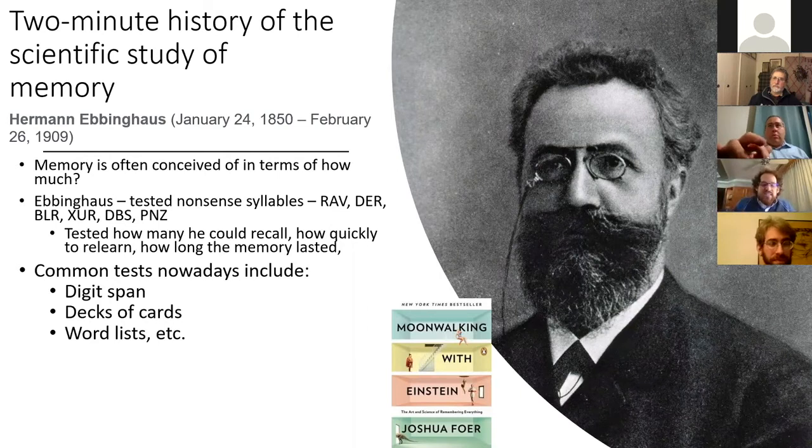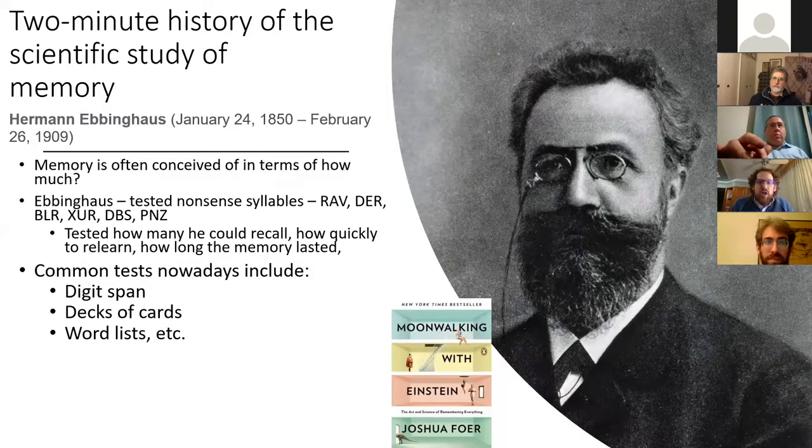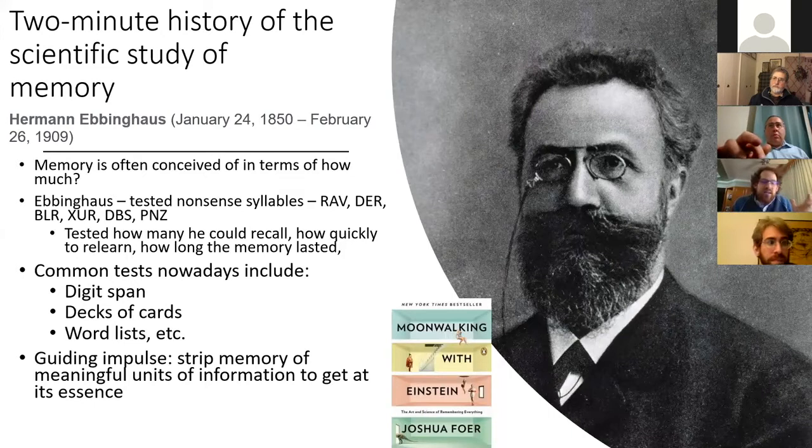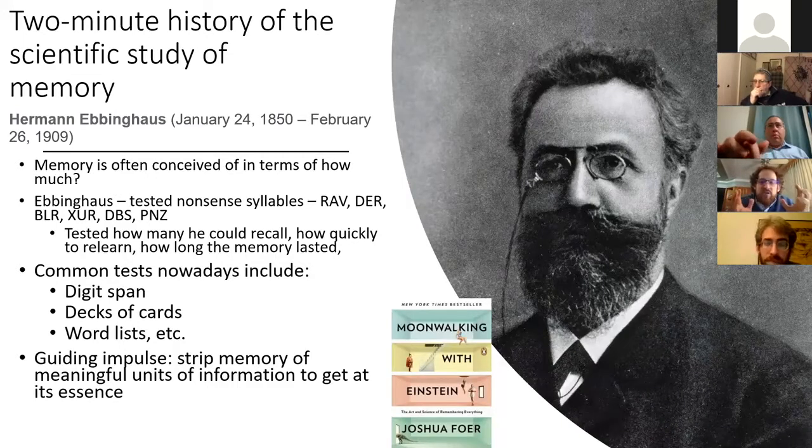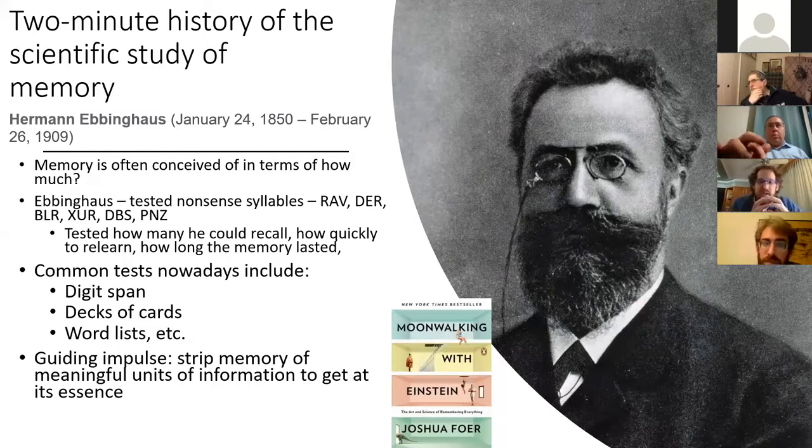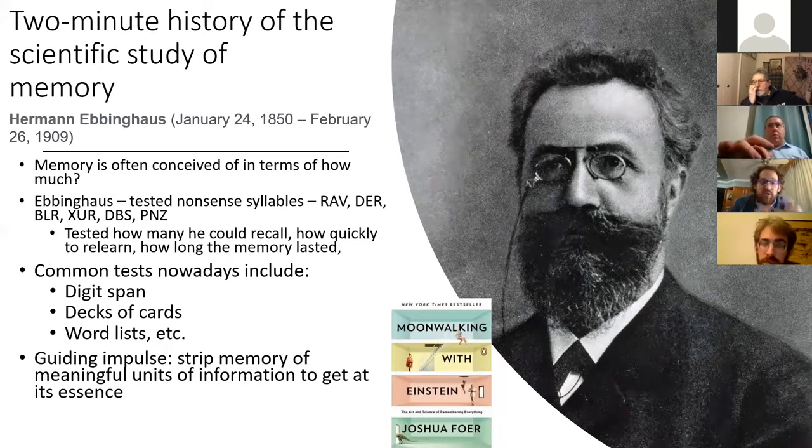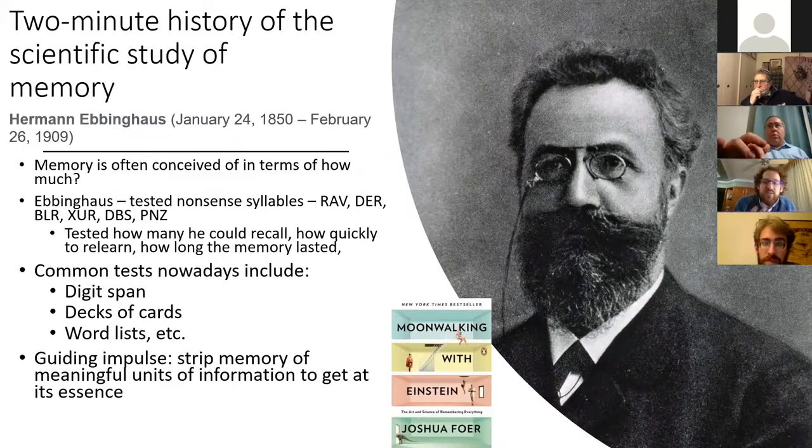And common similar Ebbinghaus style tests now exist like a digit span, right? So I'm going to repeat five number combinations and then six number combinations and then seven and then eight until you can't remember them or decks of cards, as you might have read about in moonwalking with Einstein, which is a New York times bestseller on the memory Olympics. Something that if you think it's boring, wait till you see the instant replays. This all comes from a pattern of conceptualizing memory on the level of how much can we recall, how much, how fast, how accurate.